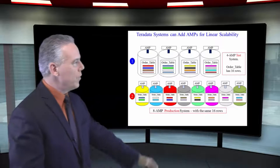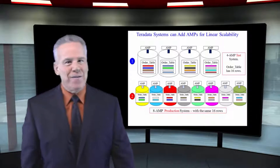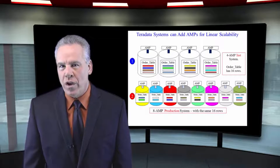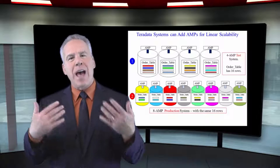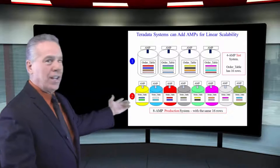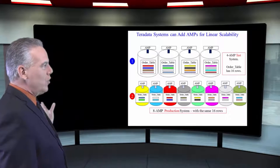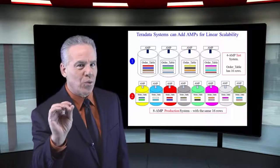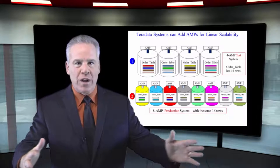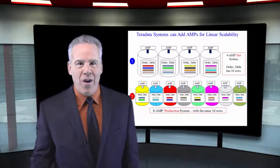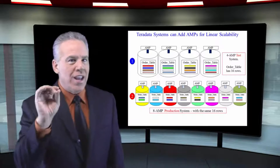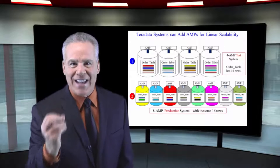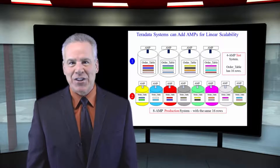Now take a look at this. This is how it works. We have our system at the top. It's got four AMPs. There are 16 rows in this table. Each AMP holds four of those. Maybe this isn't enough power for us. So we decide to get an upgrade and now our new system has eight AMPs. Each table is redistributed so the rows are spread across all of them. And now instead of each AMP having to go after their four rows, each AMP has to go after their two rows. This is twice as fast. That's linear scalability.